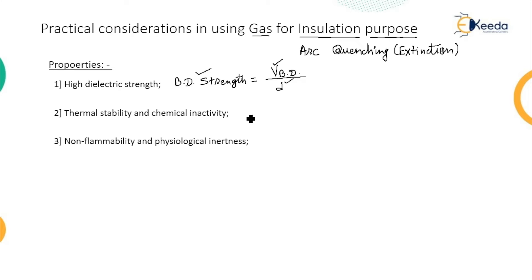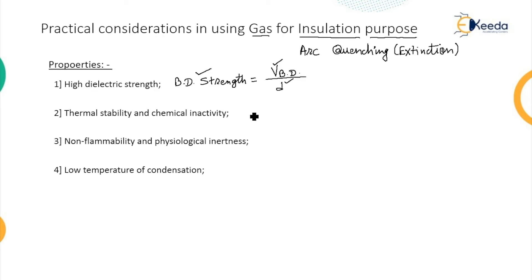Another point is physiological inertness — whenever the gas encounters changes in parameters, it should not affect the heart and hemoglobin of the operator or person. So it should be non-toxic and non-anesthetic. It should also have a low temperature of condensation, meaning the conversion of gas into liquid should occur at a low temperature. Additionally, it should have good heat transfer capability, especially during the formation of an arc.